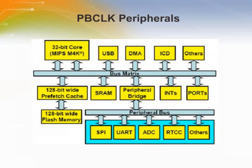The PBCLK peripherals are one more class of peripherals that run from PBCLK. The SPI, UART, ADC, RTCC, I2C, etc., are examples of PBCLK peripherals. The exact value of PBCLK is determined by the setting of the peripheral bridge module. Available options are to run PBCLK at 1-to-1, 1-to-2, 1-to-4, and 1-to-8 of SYSCLK speed.